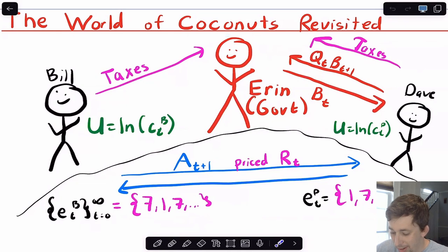And so Dave can pay Erin QT BT plus one in order to buy some bonds for tomorrow. And Erin will give bonds to Dave today. Again, taxes, the price of bonds, bonds. It's all in terms of coconuts. We're not dealing with any dollars. So if I've got to pay a tax of two, that means I'm paying two coconuts. If Erin owes Dave two coconuts worth of bonds, his BT would be two. Again, just no money involved.